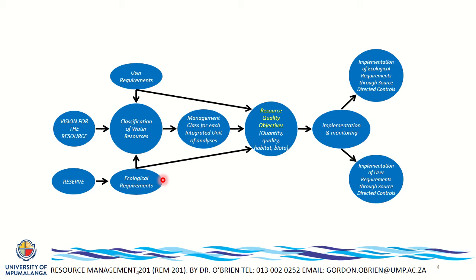The RQOs are specific objectives applicable to a particular river, wetland, estuary, or area. They apply at different spatial scales — one site, a small area, a whole region, or a group of systems. They are specific targets or objectives required for the quantity and flows of water, the quality of water, the habitat, and the biota. The Water Act requires that RQOs are set, so they become laws — and can be set for flows, water quality, habitat, and biota — to achieve the class, the balance, the vision, and ultimately sustainability.